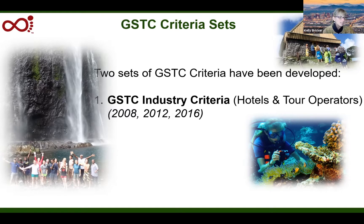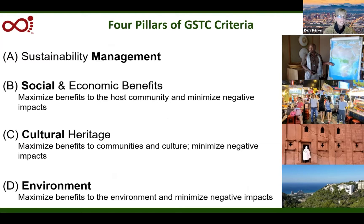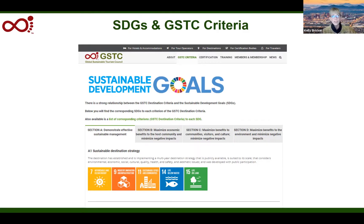The GSTC destination criteria relates to sustainable management of tourism destinations. The GSTC criteria is based on four pillars — not only environmental, but social responsibility, finding livelihoods and economic benefits for communities, cultural issues, and management of tourism at a destination level and tourism products. The substance of the sustainable development goals is found more specifically in the GSTC criteria as it relates to tourism, making it the framework to use for applying the SDGs to tourism development.